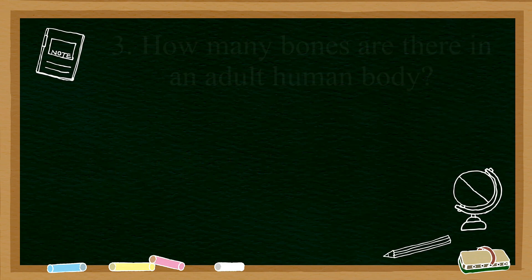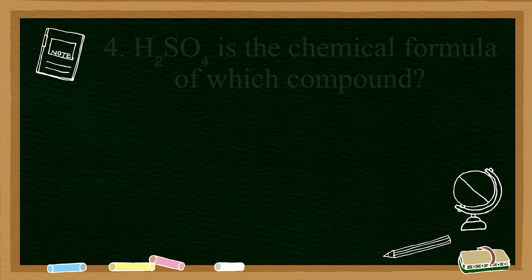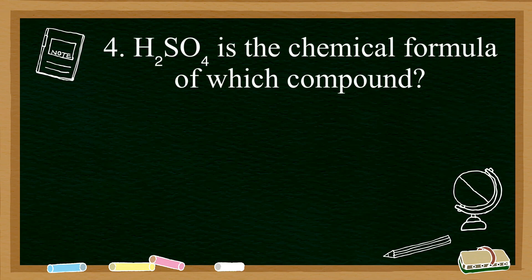Number three: how many bones are there in an adult human body? I bet this was an easy one. The correct answer is 206 bones.